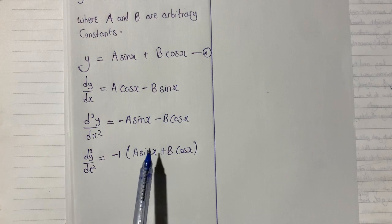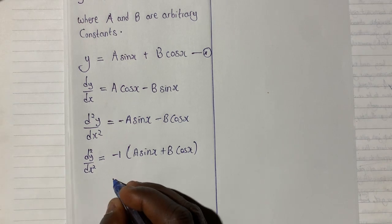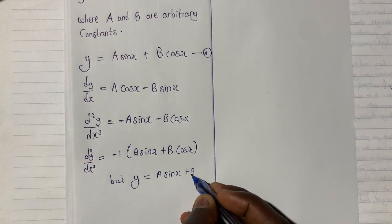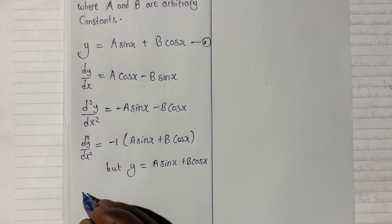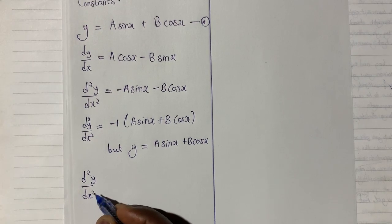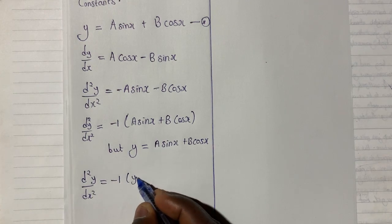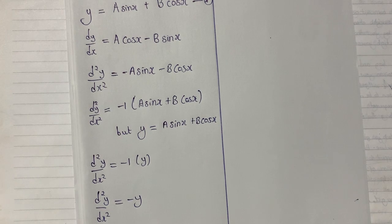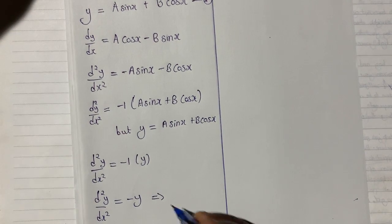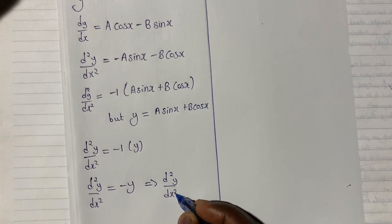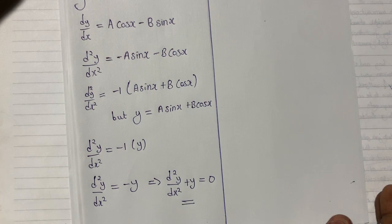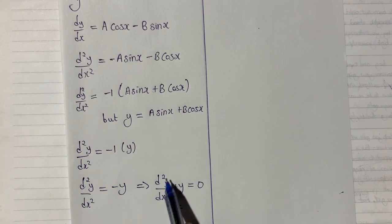So we can substitute equation star into the second derivative. From equation star, y equals a·sin(x) plus b·cos(x). So I can substitute this, giving d²y/dx² equals minus one times y, which means d²y/dx² equals minus y. Rewriting this: d²y/dx² plus y equals zero. This is my final answer — I have formed a new differential equation: d²y/dx² plus y equals zero.